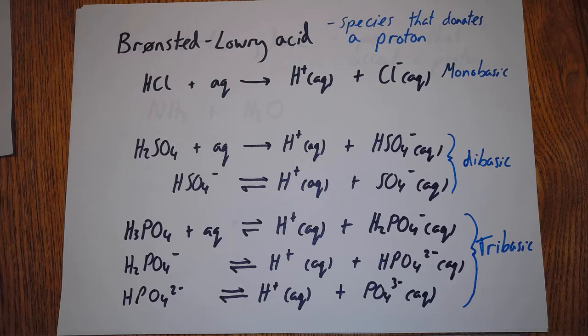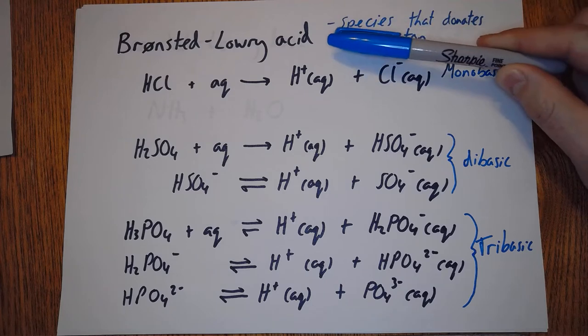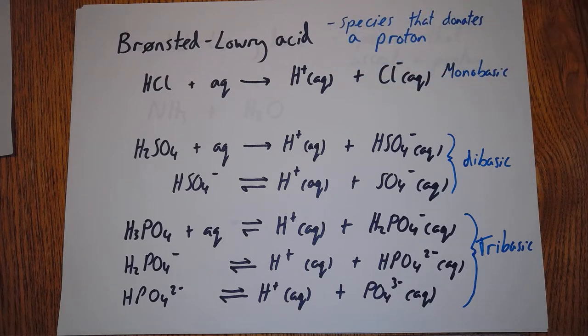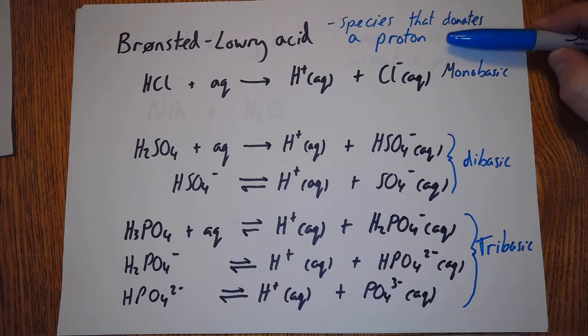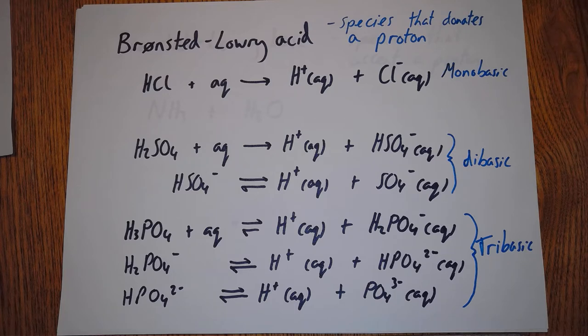In this first video, I'm going to give you a bit of revision of some acid and base stuff that you've seen before in first year, and then we're going to take it a little bit further and look at some different things. This is a term you might not have come across, but it's basically the same one as you've seen last year: a Bronsted-Lowry acid. The definition is basically the same as what we had last year for an acid - the species that donates a proton or an H+ ion.